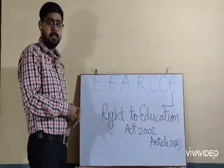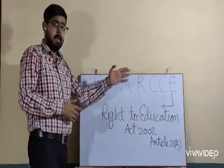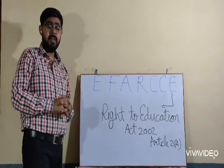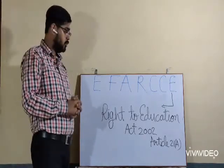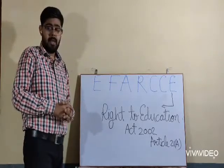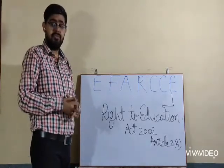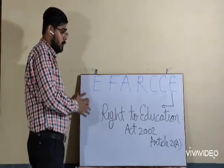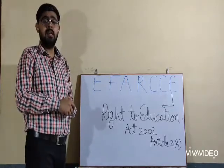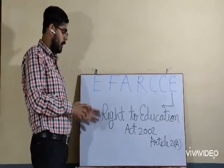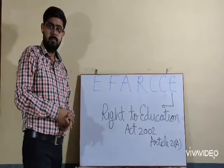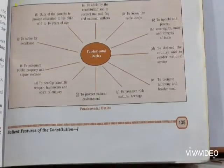The last alphabet E stands for right to education. According to the 86th Amendment of the Constitution Act 2002 and Article 21A, free education is provided from the age of 6 to age of 14. Children under this age group can get free education according to the Right to Education, which we call RTE.